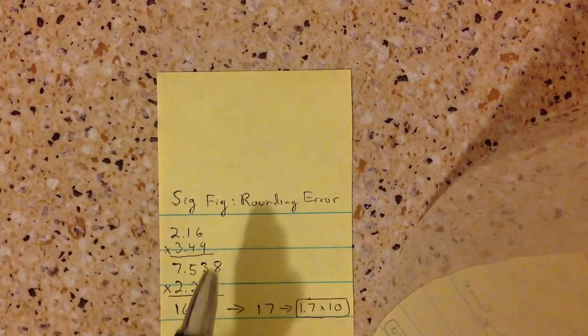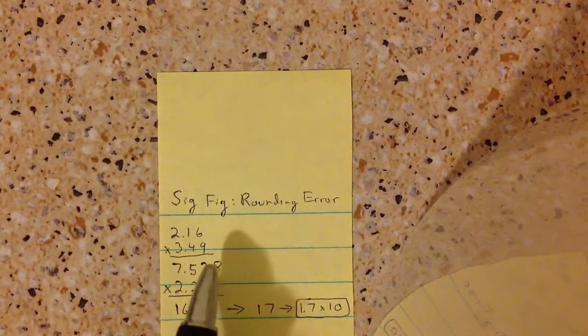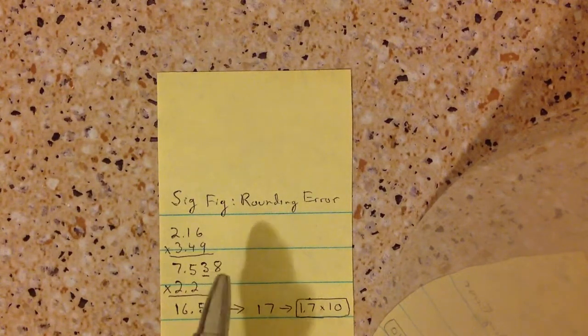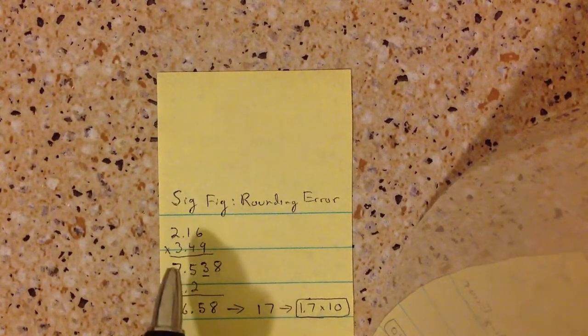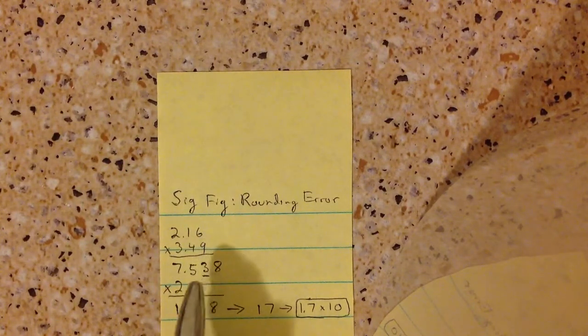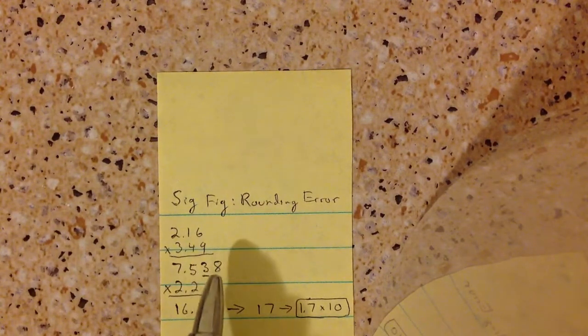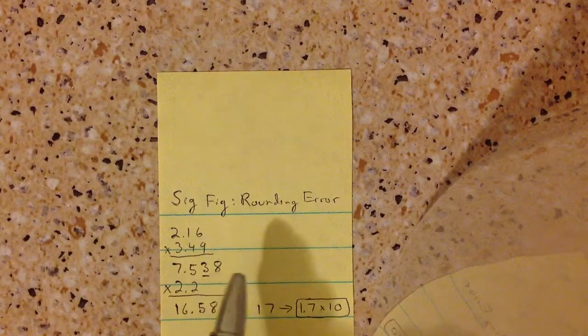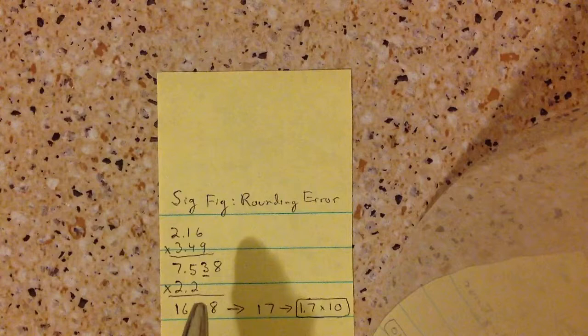But since you're multiplying this answer by 2.2, you keep one additional sig fig after that. So right here, the answer should have been 3 sig figs, that's why I underlined it. But what you do is you keep 4 sig figs, you keep one more. And now you can multiply by 2.2.